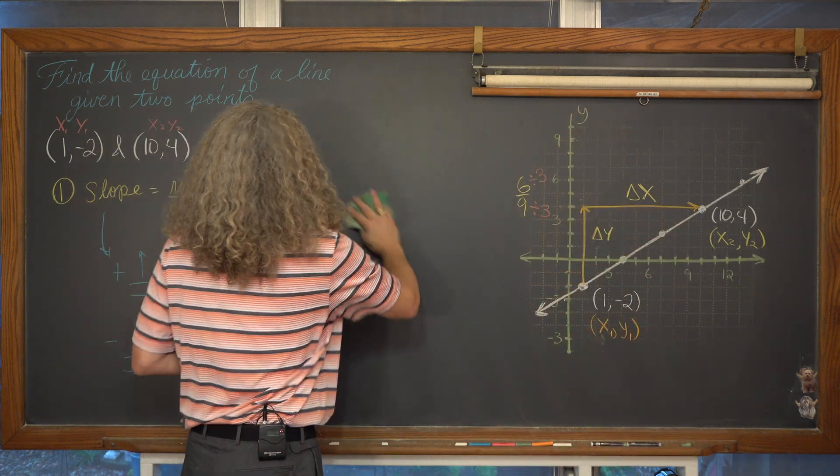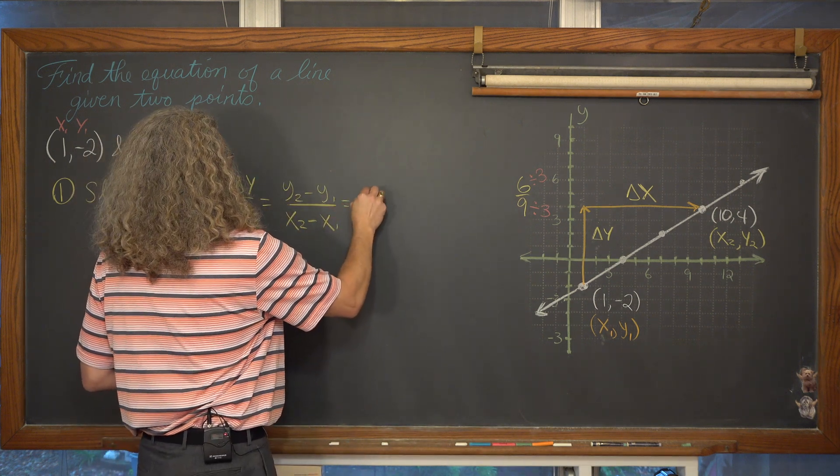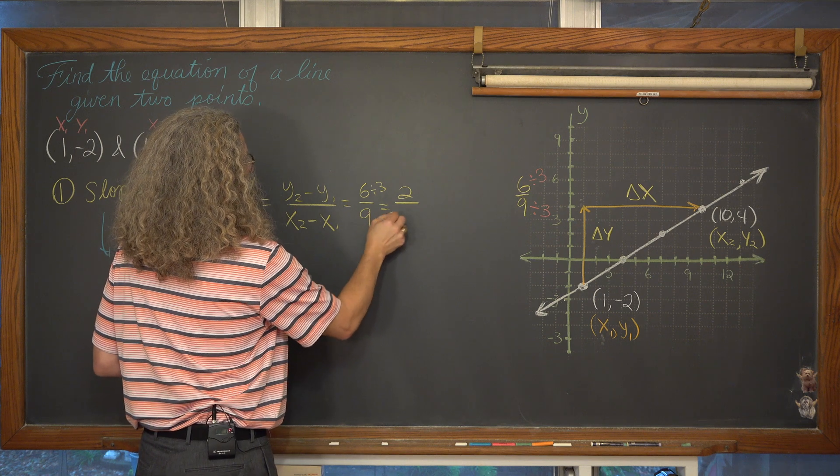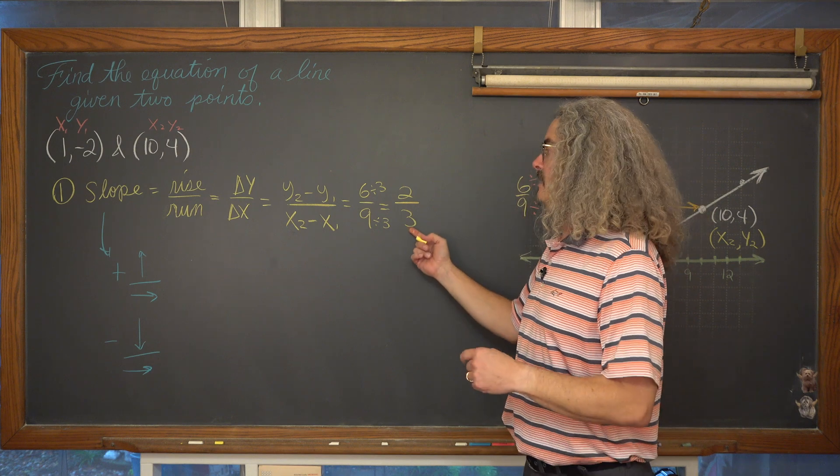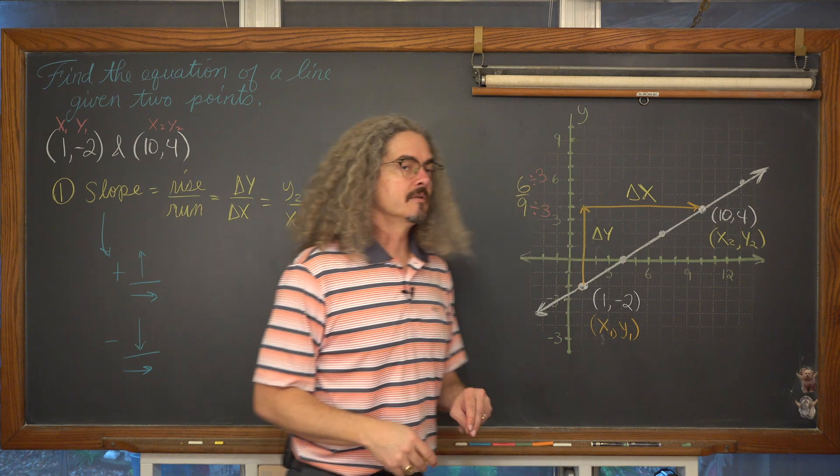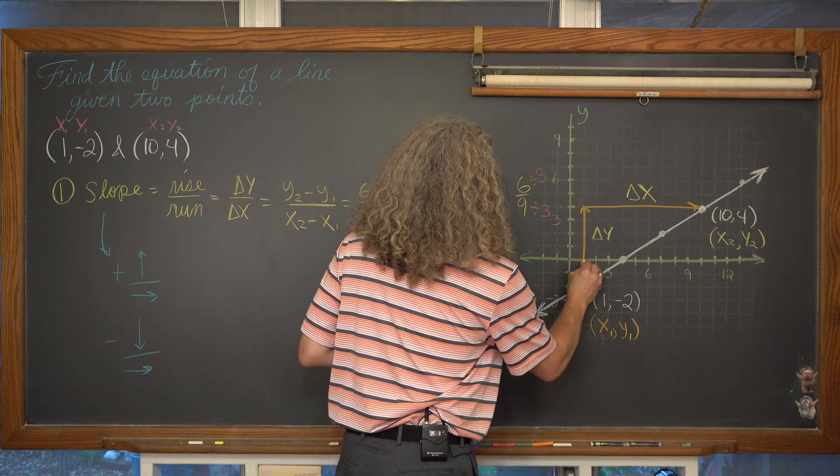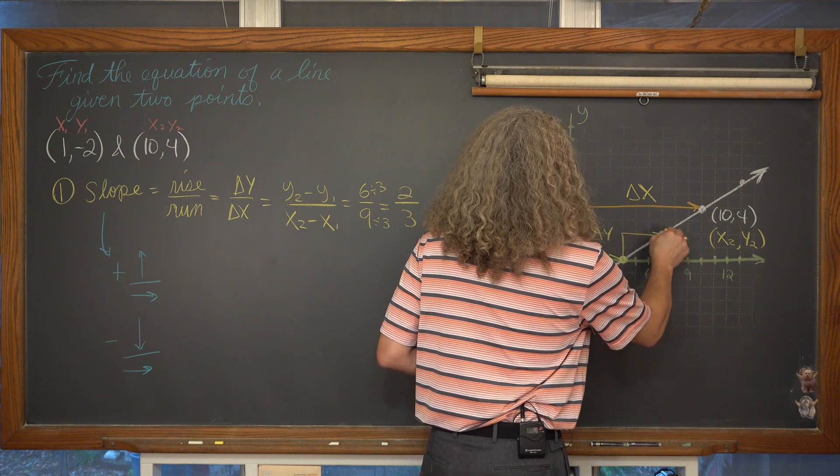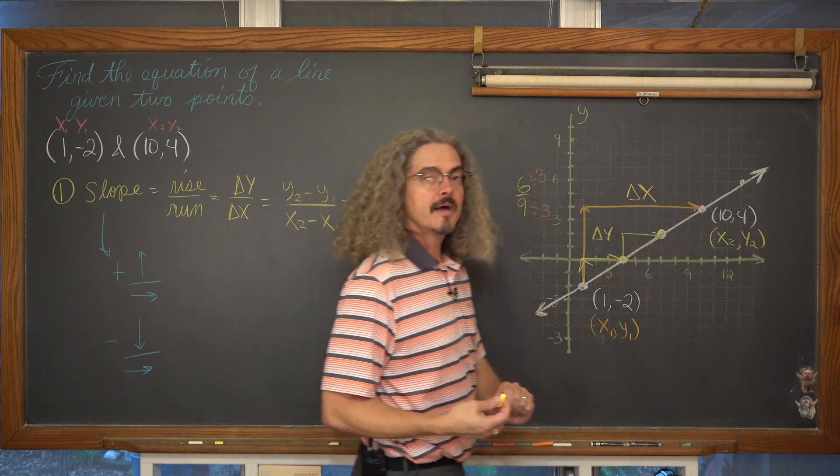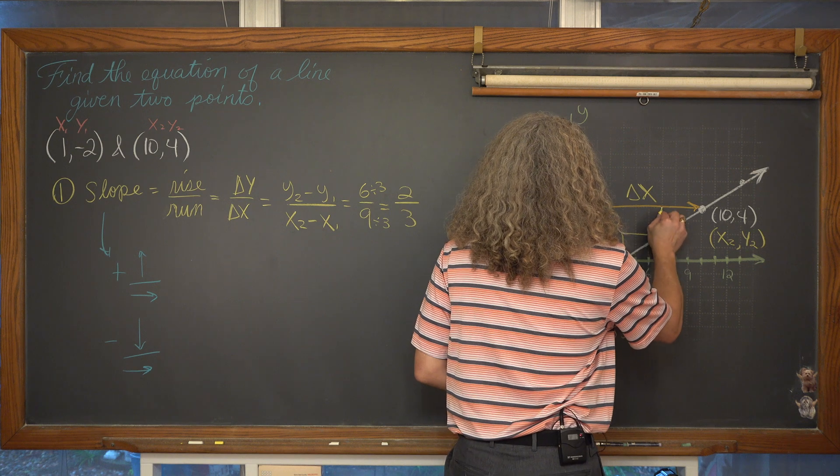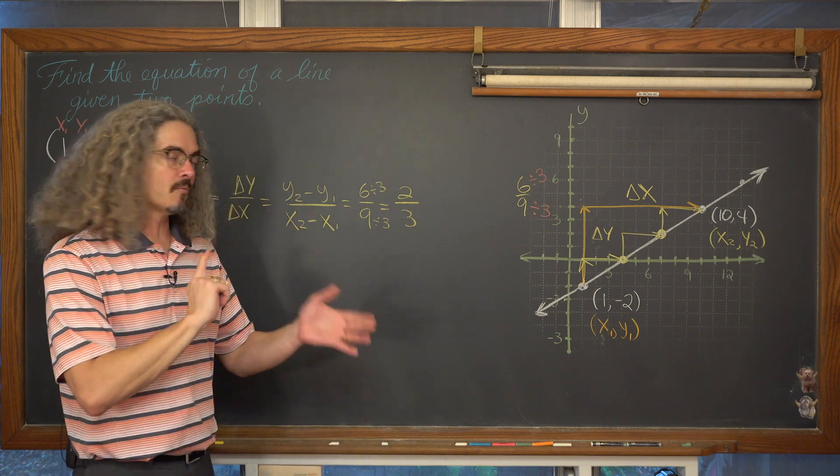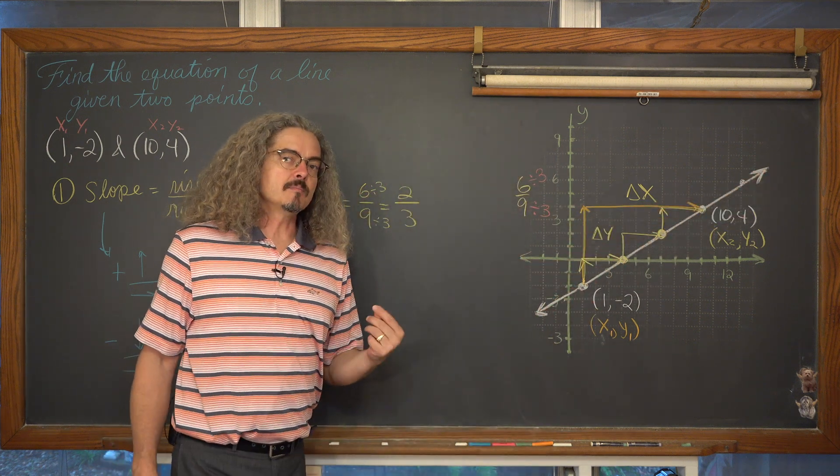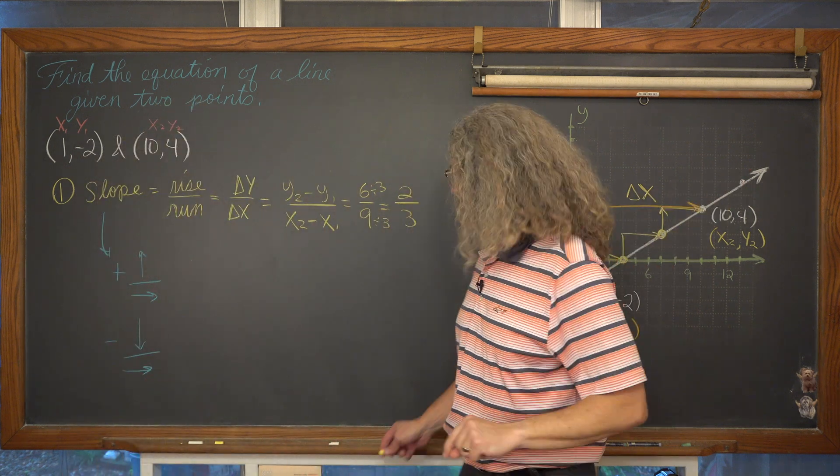So our slope in reduced form is going to be 6 over 9, which is going to be equal to 6 divided by 3 is 2, 9 divided by 3 is equal to 3. So now I have calculated a slope for the line passing through the points of (1, -2). And we can see that if we go up 2 and over 3, I get a point that that line passes through. If I go up 2 and over 3, I once again find another point that's actually on that line, falls on the line, and if I go up 2 and over 3, I once again hit that point of (10, 4). So the reason why I'm highlighting this is because any two points you use, as long as those two points are on the line, you're going to get that same slope. The slope of a line which is constant. And that's going to be important for the second part of this problem.